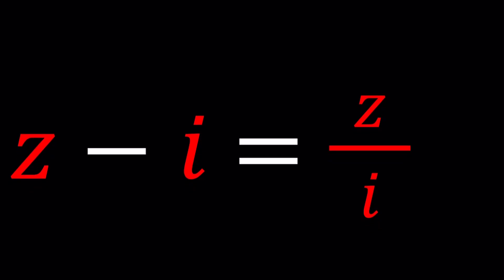In case you forgot, I is the number whose square equals negative 1. In other words, I squared equals negative 1. Okay, I'll be presenting three methods, and let's start with the first one.